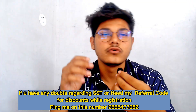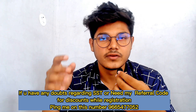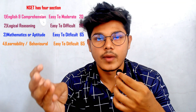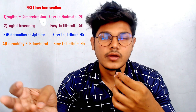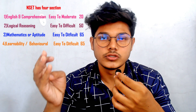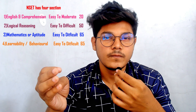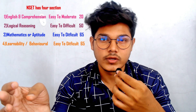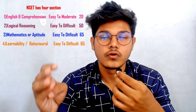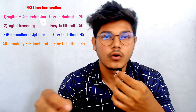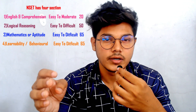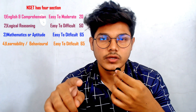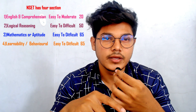First of all, the NCT test has four sections. First is Mathematics or Aptitude, second is Logical Reasoning, third is Learnability or Behavioral questions, and fourth is English Comprehension or Verbal Ability. These are the four sections you'll be getting in the NCT test.